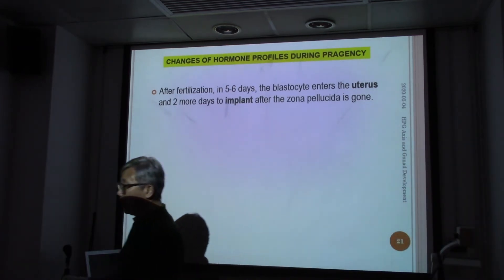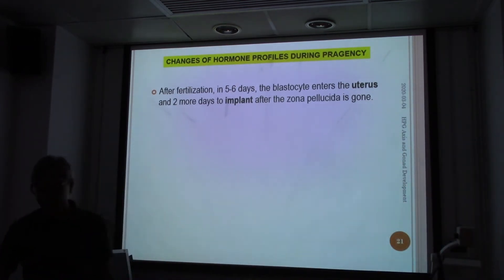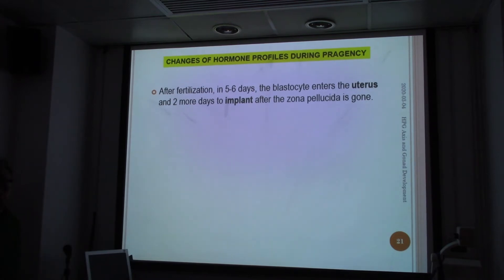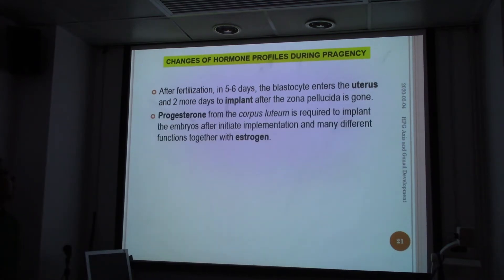Many cases of miscarriage come from the fact that the zona pellucida could not be removed, and then the fertilized egg could not be implanted onto the uterus.